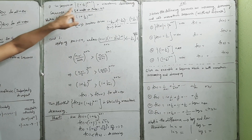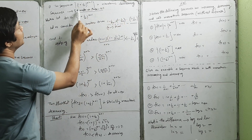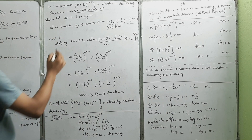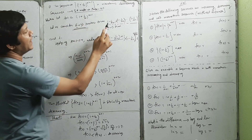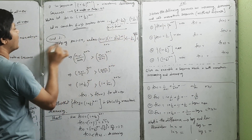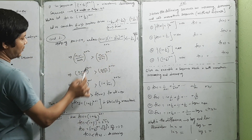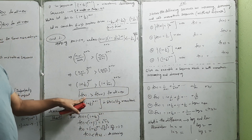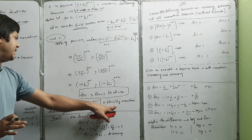Let us consider 1 plus 1 by n, which is a monotonic decreasing sequence. Let us consider n plus 2 as a positive term. This is 1 by n, that is n times. We need to compute f(n) using n plus 2 as a positive term.